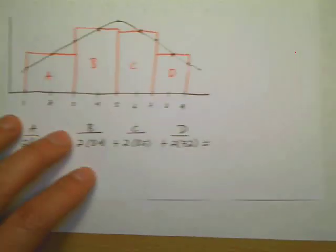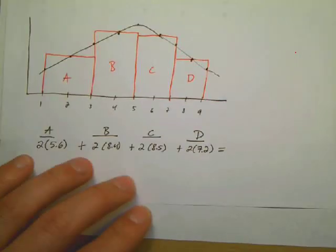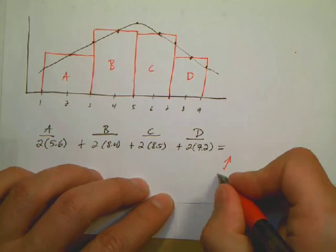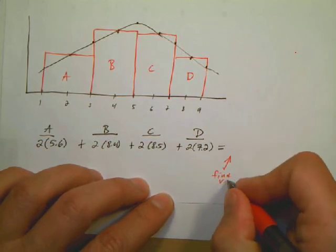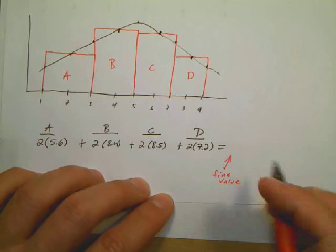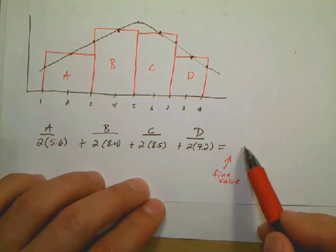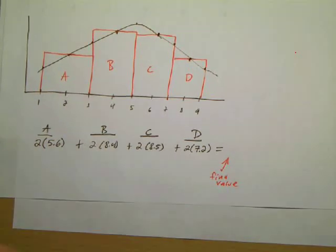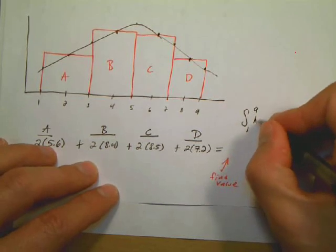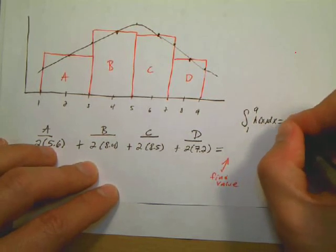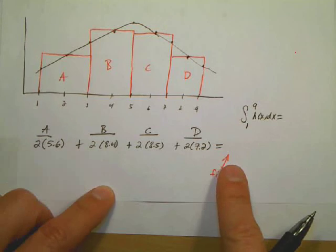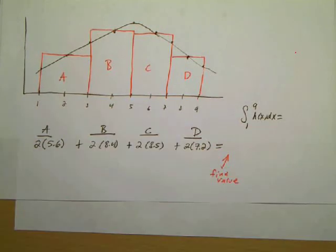So I add all of this up — go ahead and find the value yourself and write it down. When you add it all up, that's the approximation — the approximate value of the integral from one to nine. I'll be checking that you have this value written down.